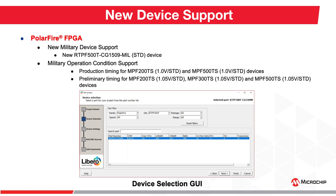With this release, we are introducing a new radiation-tolerant PolarFire RTPF500T FPGA device with CG1509 package in a standard speed grade. We are also supporting production timing for MPF200TS and MPF500TS devices at a core voltage of 1.0 volts with standard speed grade.